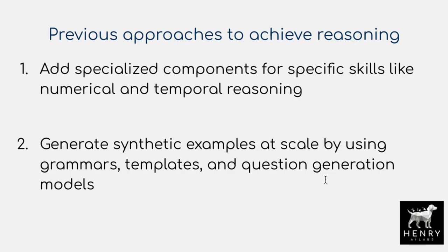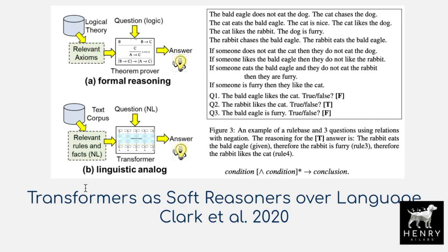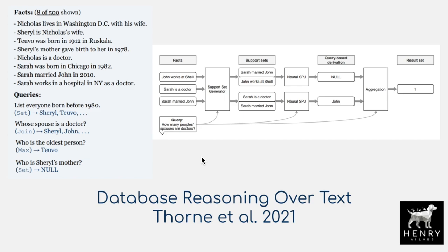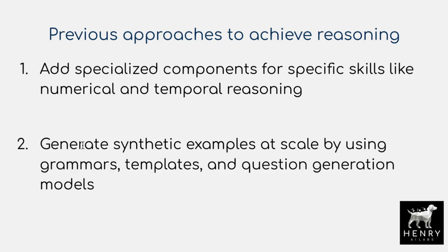The other camp — and what this technique falls into — is generating synthetic examples at scale using grammars, templates, and question generation models. This data augmentation approach forms data and adds it to the manifold of language being learned, embedding these reasoning skills through examples. A related example is the paper 'Transformers as Soft Reasoners over Language,' which uses compositional regular-expression-style logic — combining facts using conditions to draw conclusions — as a form of symbolic reasoning through data augmentation.